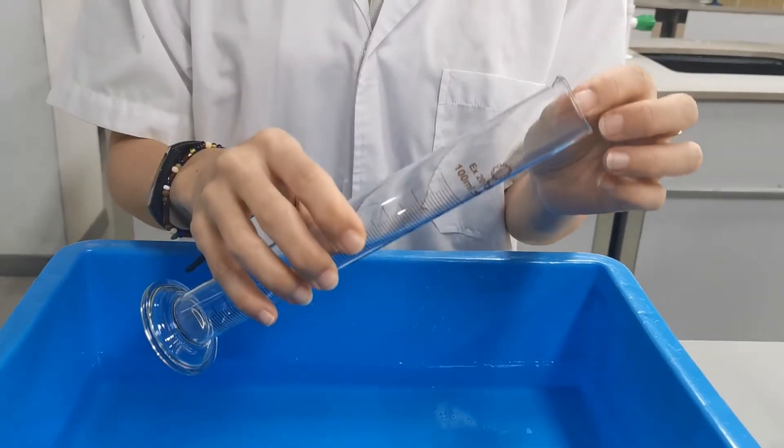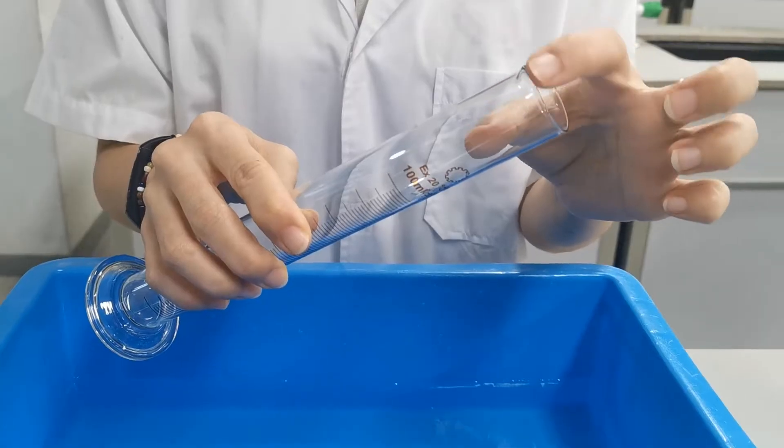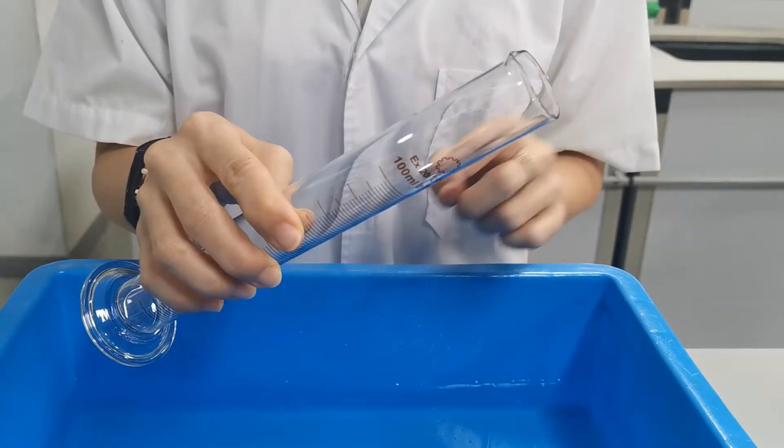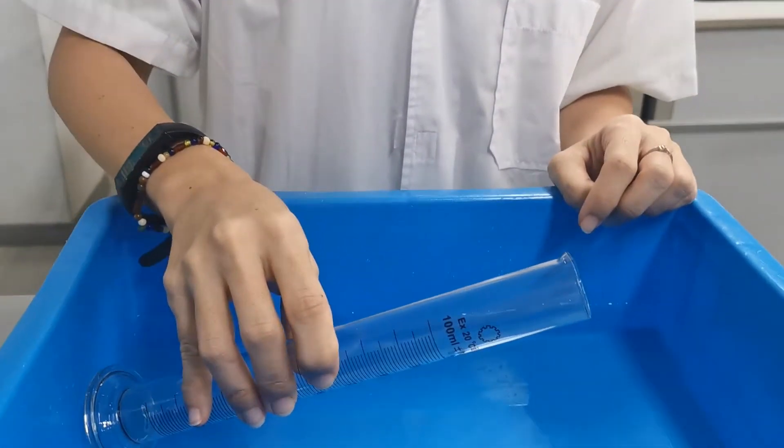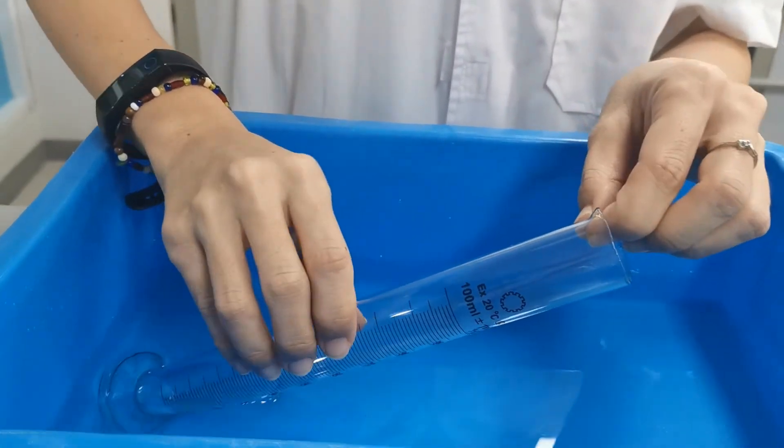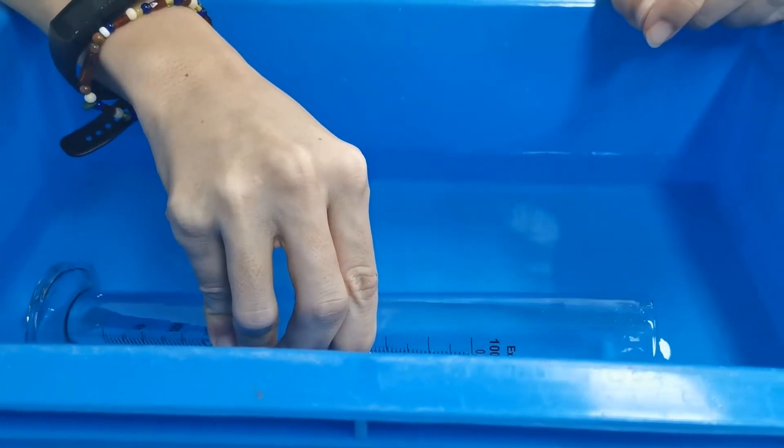This is how I do it. At the top of the measuring cylinder, we want to keep this tip upwards. As we lower the measuring cylinder slowly into the water, the cylinder will be filled with water and all the air will be eliminated.